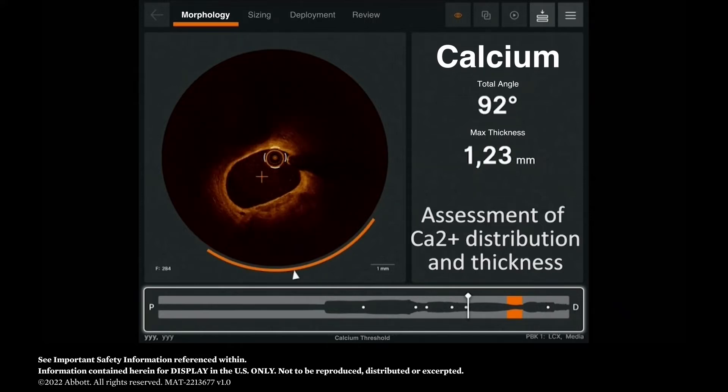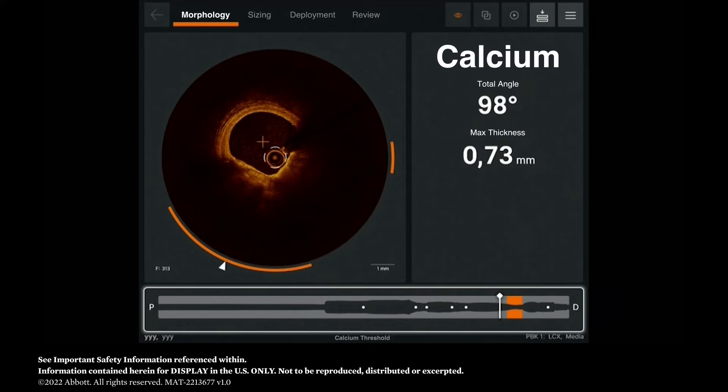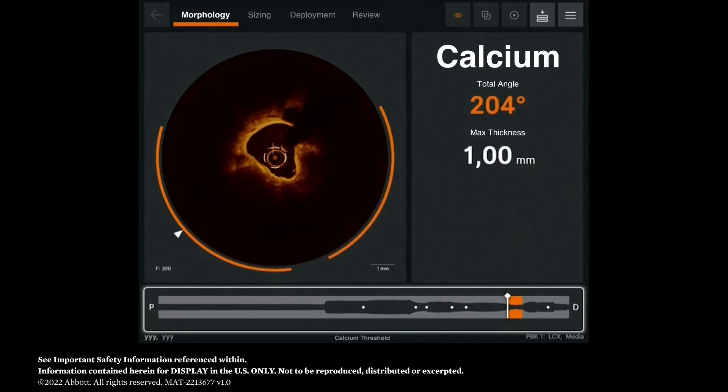And you can see here how the system really provides an analysis of calcium that includes the arc of the calcium that you can see, and also the thickness of the calcium, the maximum thickness of the calcium in each frame. And those are of course very relevant aspects to decide whether a lesion really needs special plaque preparation or just normal predilation.